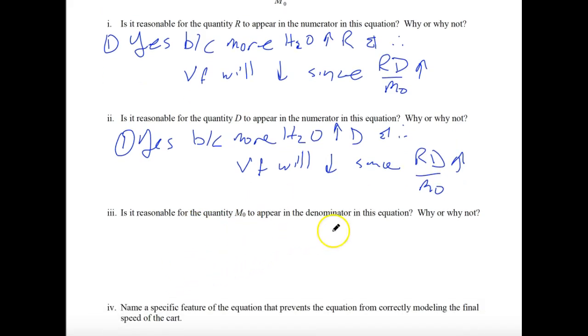For the third one, it says is it reasonable for the quantity M0 to appear in the denominator? And this one is also yes. This one's yes for a different reason though. So if you increase M0 here, so the more massive the cart, then you will have a smaller RD over M0 to subtract from the original velocity. So it will get slower, but it won't get slower as quick of a pace is what they're trying to get you to see.